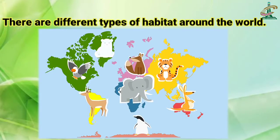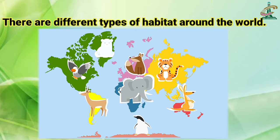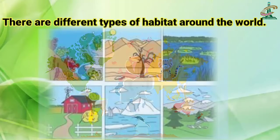And there are different types of habitat around the world. Different animals کی رہنے کی جگہ بھی different ہوتی ہے۔ کچھ animals پانی میں رہتے ہیں، کچھ animals forest میں رہتے ہیں اور کچھ deserts میں۔